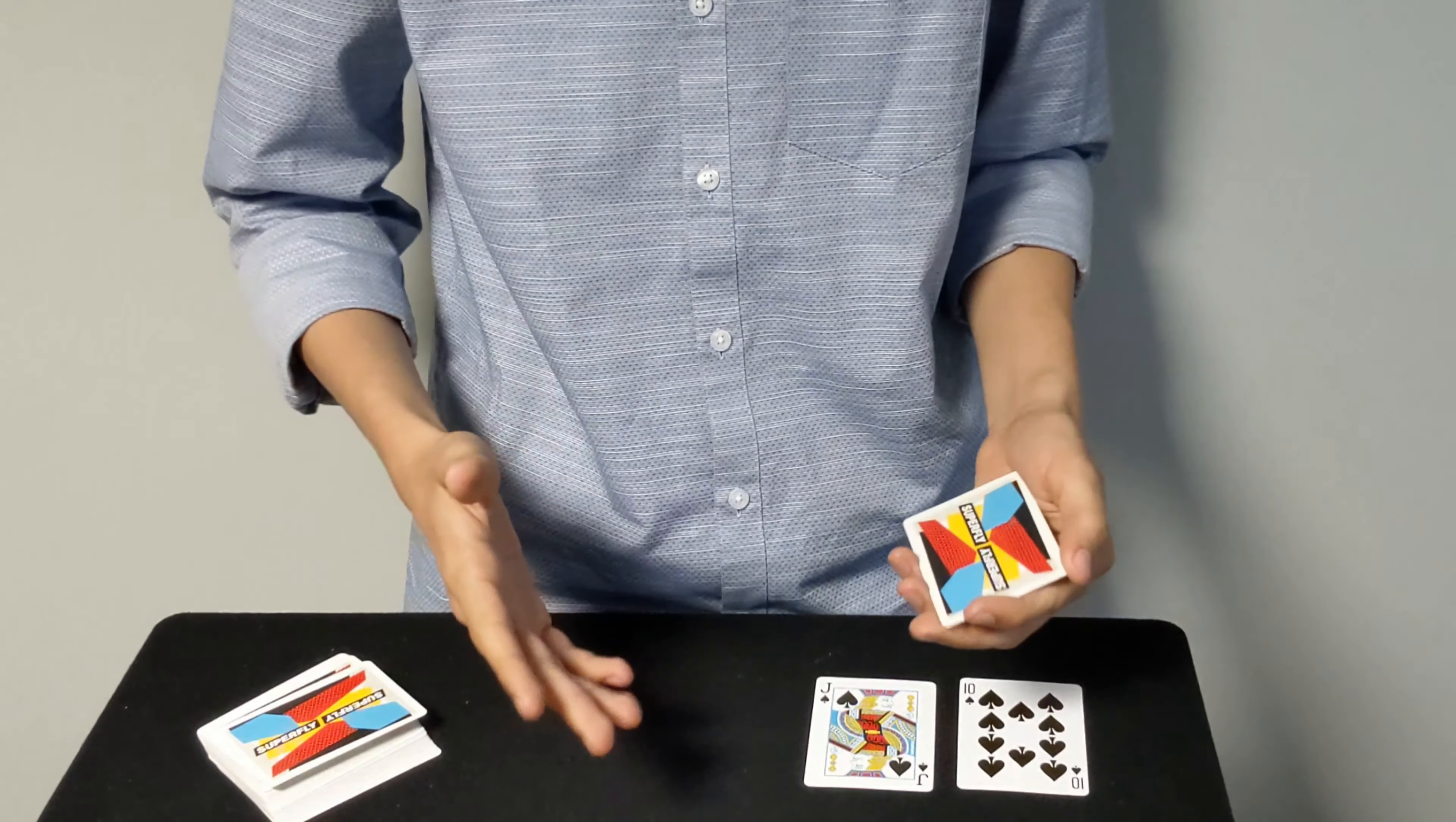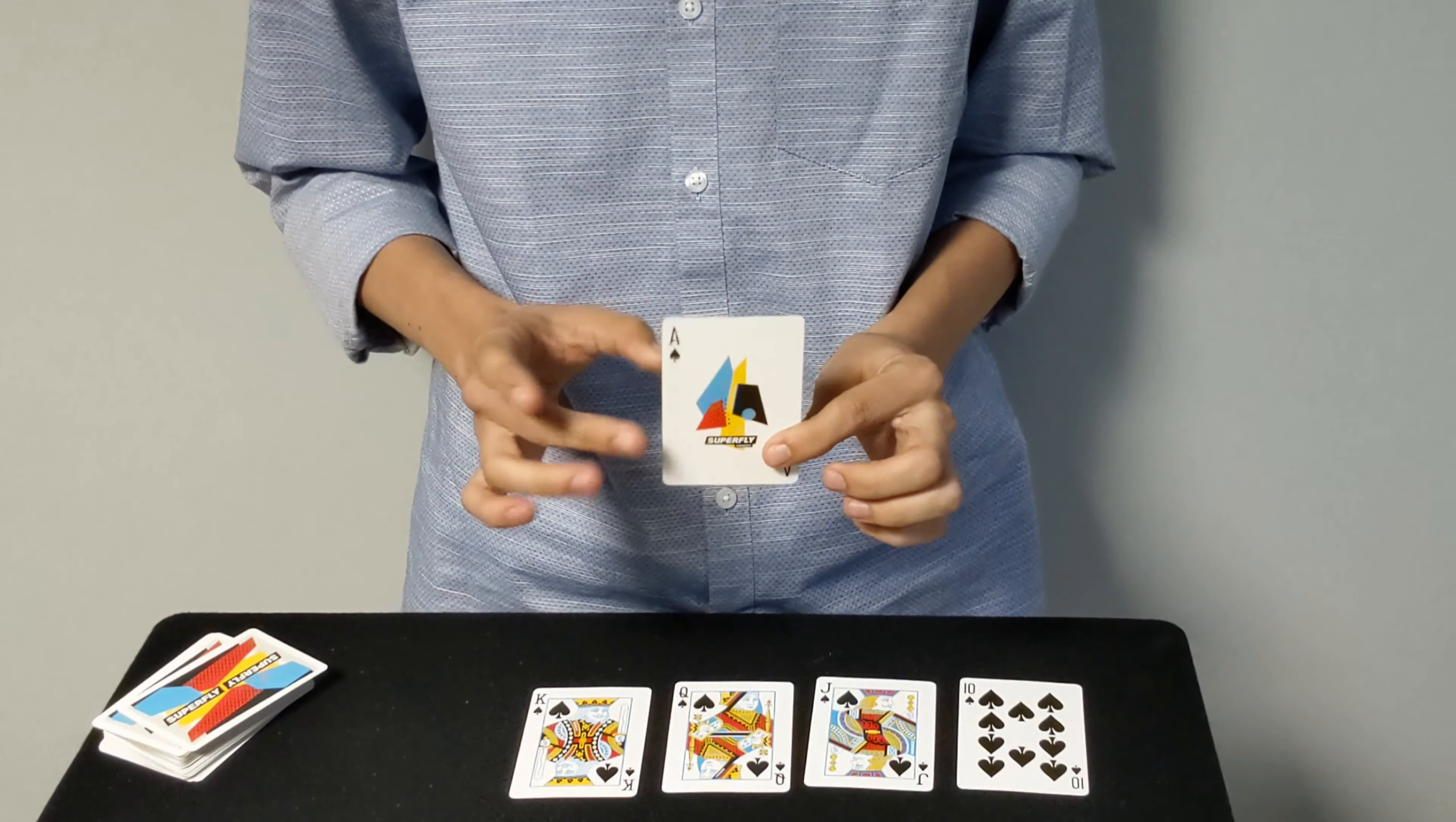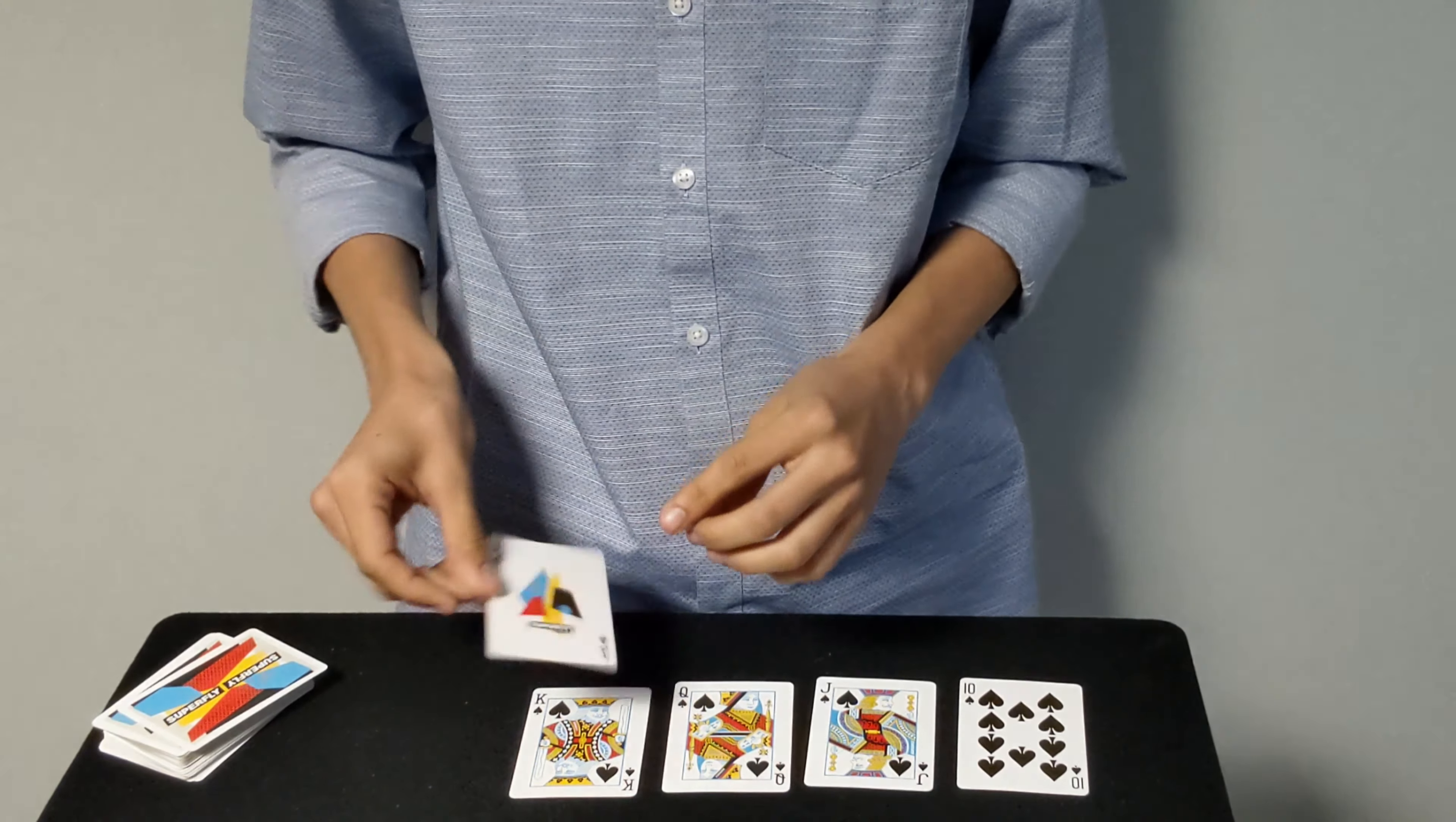He takes them and one by one flips them over from the ten to the jack. That way the spectator starts to realize what's happening and it doesn't all just flash on them at once. The spectator gets to figure this out as it goes along. So the jack, and then the queen, and then the king, then last but not least, the ace of spades.